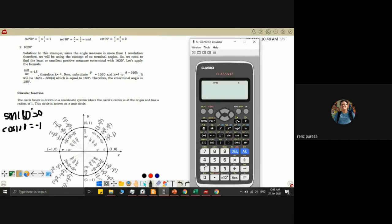The purpose of our coterminal angles is that instead of using 180, instead of using 1,620, we can use 180. They have the same answer. So let's look. Sine of 1,620 - we have zero. Same answers. And the next, cosine 1,620 - same answer.